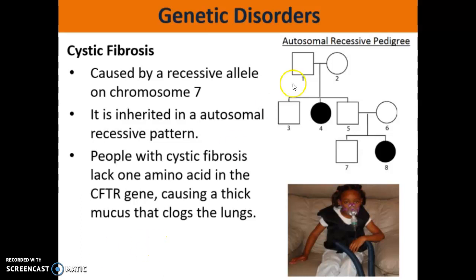If we look at this pedigree right here, this is a typical pedigree of somebody that would have Cystic Fibrosis in their family. The main clue that tells us that it's autosomal recessive is that here you see two parents who don't have the disorder, yet they have a child who does. The only way for that to happen is if both parents are heterozygous and they both pass on the recessive Cystic Fibrosis allele onto their daughter.